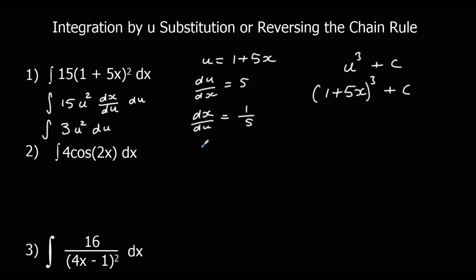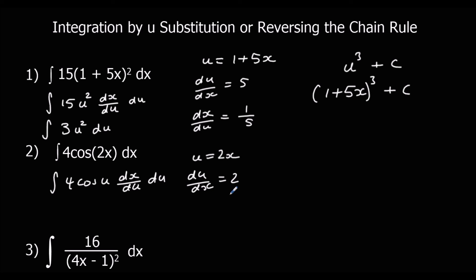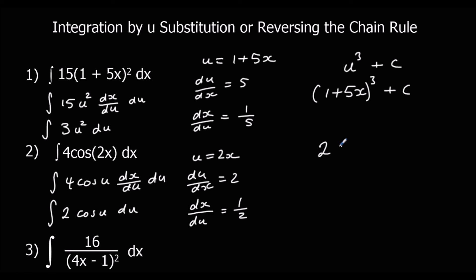Question 2 — u is 2x, giving us the integral of 4 cos u times dx/du with respect to u. du/dx is 2, so dx/du is one half. 4 times one half is 2, so we integrate 2 cos u with respect to u. Cos integrated gives sine, so that gives 2 sin u plus c, and changing u back to 2x: 2 sin(2x) plus c.